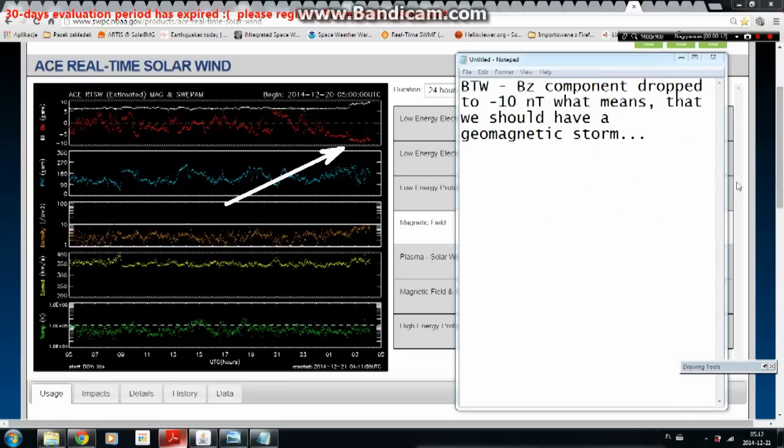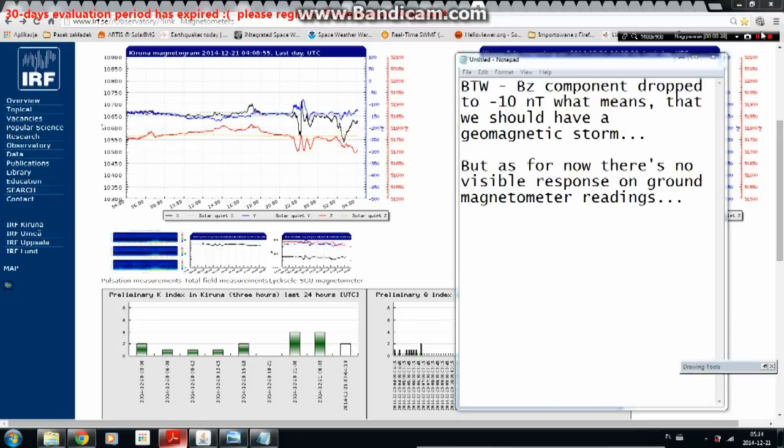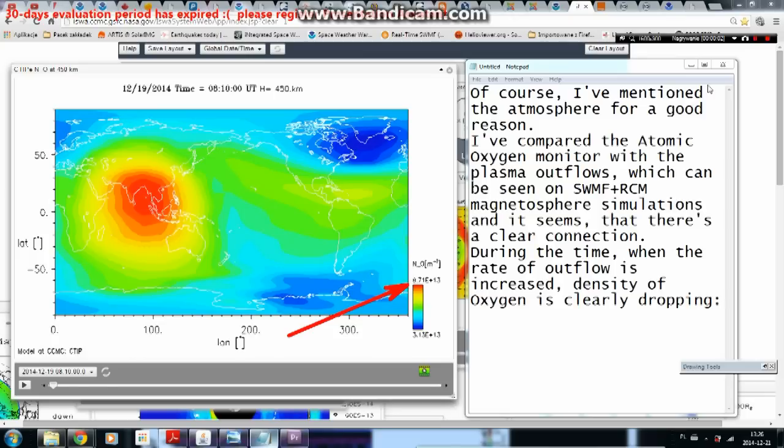By the way, BZ component dropped to minus 10 nanoteslas, what means that we should have a geomagnetic storm. But as for now, there is no visible response on ground magnetometer readings.